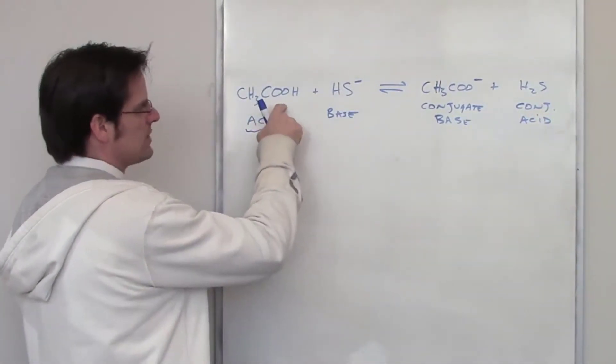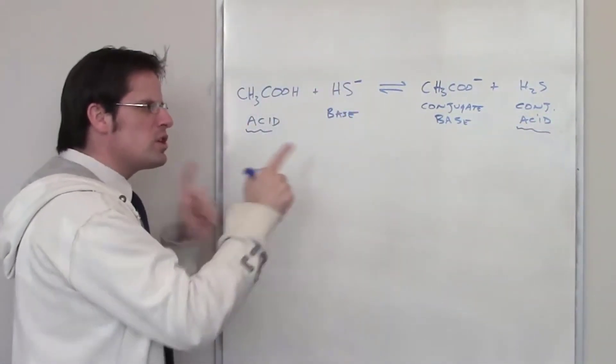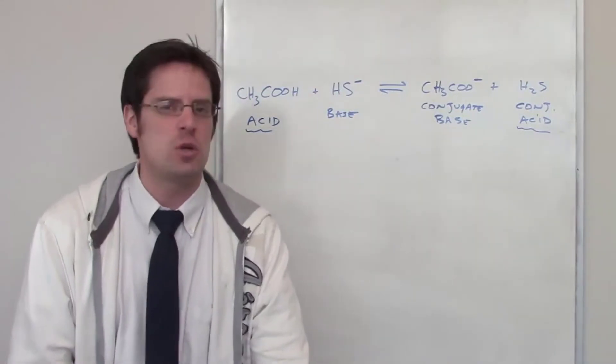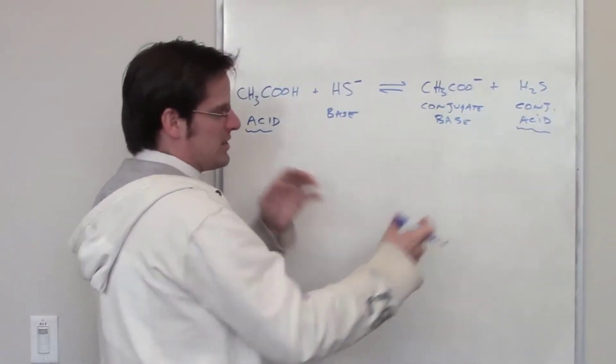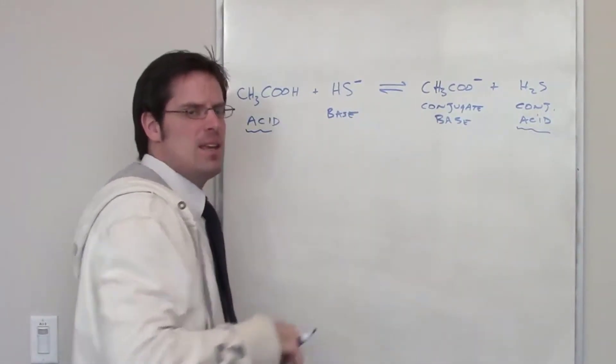Well, I've got this one right here, acetic acid, and I've got this one over here, H2S. Which of those two acids is going to be the weaker of the two acids? Whichever one is the weaker acid, that means it's the stabler acid, so that side is going to be favored. How do we determine that?